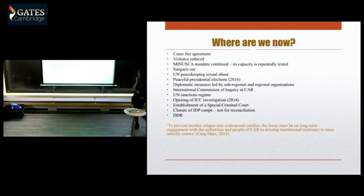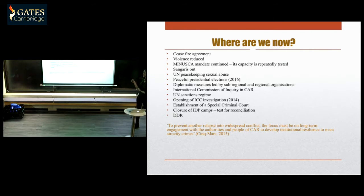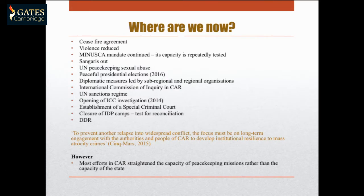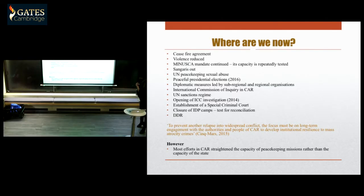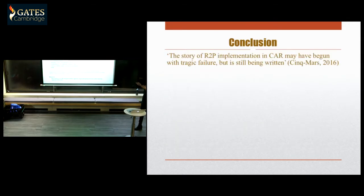As one close follower of the conflict has noted, if we are serious about preventing the Central African Republic from going to another very violent episode, the international society has to engage with the authorities and people of the CAR to develop institutional resilience to mass atrocity crimes. This reflects a moderate interpretation of R2P with attention to local ownership — what do the people in the CAR want? However, most efforts there have been directed at strengthening the capacity of the missions, not the capacity of the state.